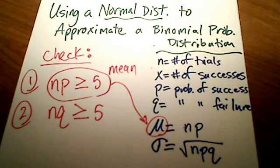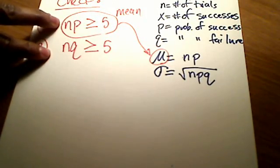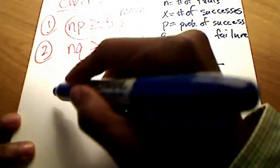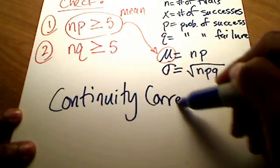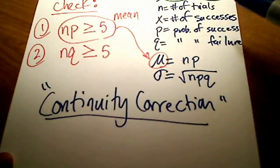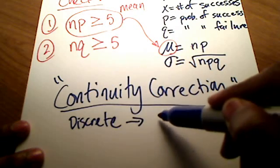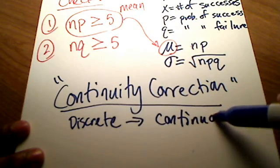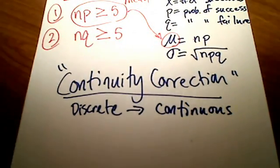Assuming those checks are true, the other thing that has to come into play is this concept called continuity correction. What continuity correction is all about is taking a discrete data value and turning it into kind of a continuous data value.